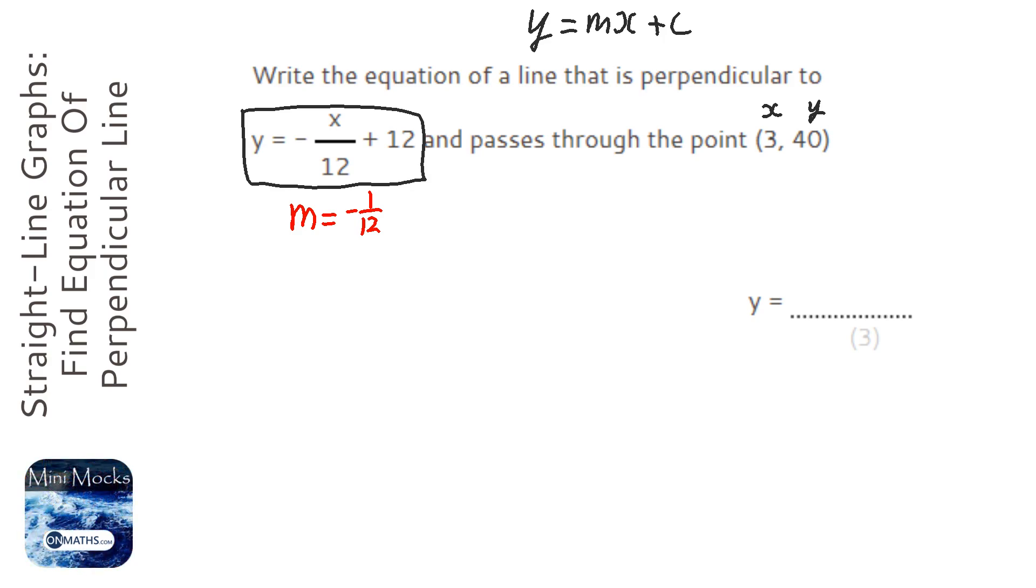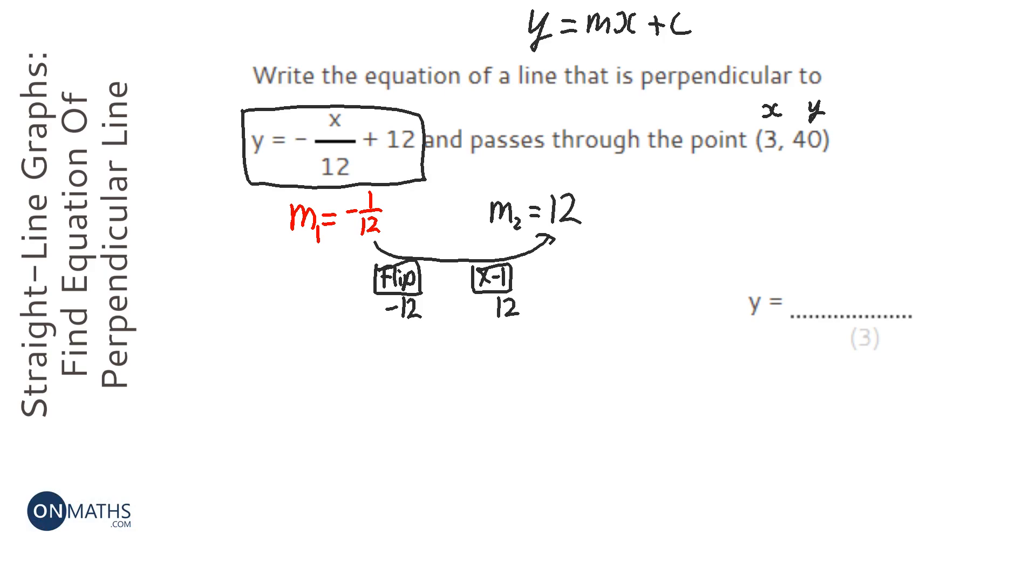Now, to get the gradient of our line, so we'll call this m1, to get the gradient of our line, which we can call m2, what you need to do is do two things. You need to flip, so it becomes minus 12, and we need to times by minus 1. So if it's positive, it will turn negative. If it's negative, it will turn positive. So it's negative, so it will turn positive. Now, the reason that works is because when you times any two perpendicular gradients together, you get minus 1. You don't need to know that, but that's why you do that.